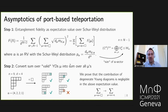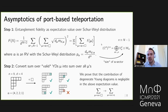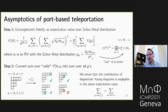The main proof steps: first, we rewrite the entanglement fidelity as an expectation value over the Schur-Weyl distribution on Young diagrams with N−1 boxes. The numerator is the size of the sector labeled by Young diagram α, normalized to give a probability distribution. This reduces the problem to understanding the asymptotics of this distribution.